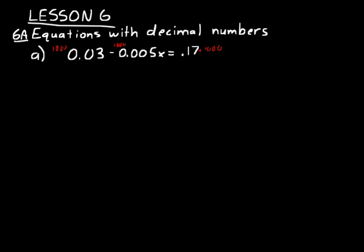So 0.03 will move it to the right one, two, three and that'll make that a 30 minus 5x is equal to 0.17 will be one, two, three, 170.